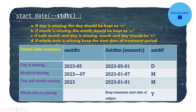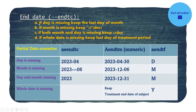That covers the start date. Similarly for the end date: if the day is missing, we need to keep the last day of the month based on which month is present; if the month is missing, we keep the 12th, meaning December; if both month and day are missing, then 31st December is used; and if the whole date is missing, you can use the treatment end date or follow your SAP.